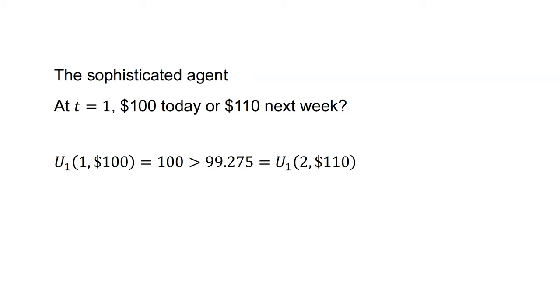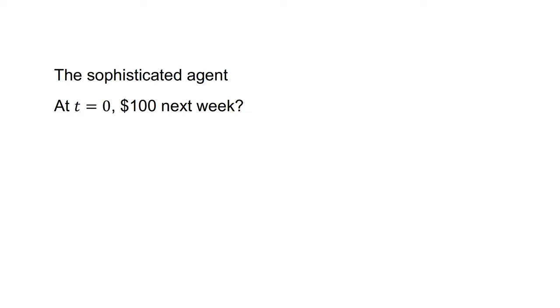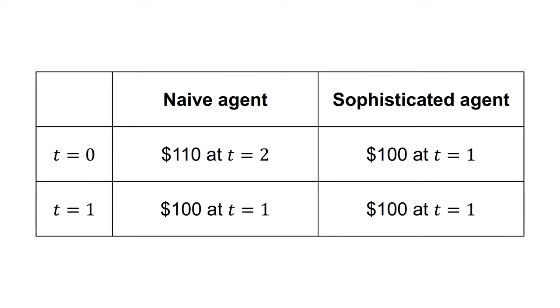The naive agent does not consider this perspective until t=1. After considering their preference at t=1, the sophisticated agent then considers their choice at t=0. They see their future decision at t=1 and know that $110 in two weeks is not available to them — the only option is $100 in one week. They effectively accept their future present bias now and choose $100 in one week. In this example, being naive or sophisticated does not change their final choice; it only changes their beliefs about their final decision over time. The sophisticated agent knows at t=0 what they will do at t=1, while the naive agent is unaware that at t=1 they will make a decision inconsistent with their choice at t=0.